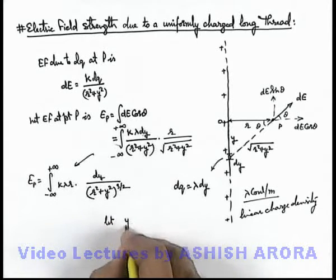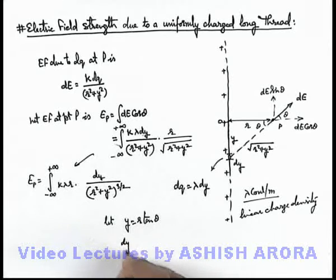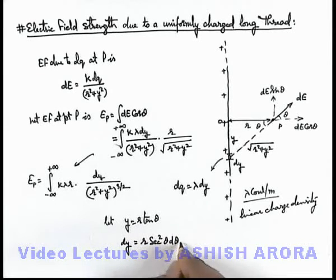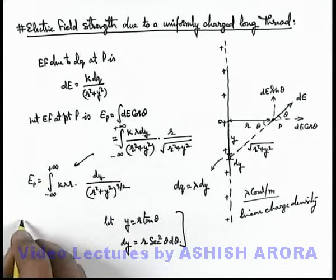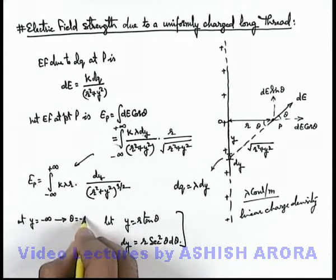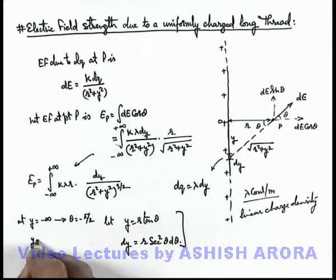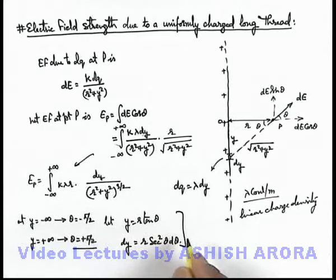We let y equal r·tanθ, which gives dy equal to r·sec²θ·dθ. Changing the limits accordingly: at y equals minus infinity, theta equals minus π/2, and at y equals plus infinity, theta equals plus π/2.